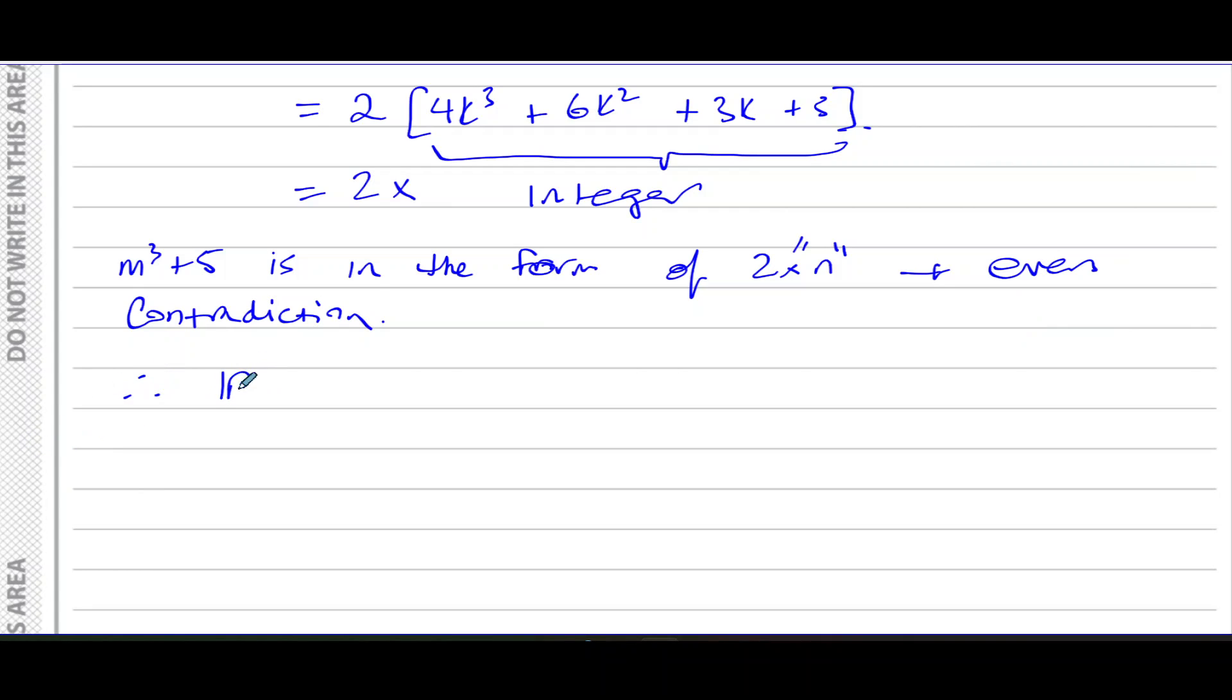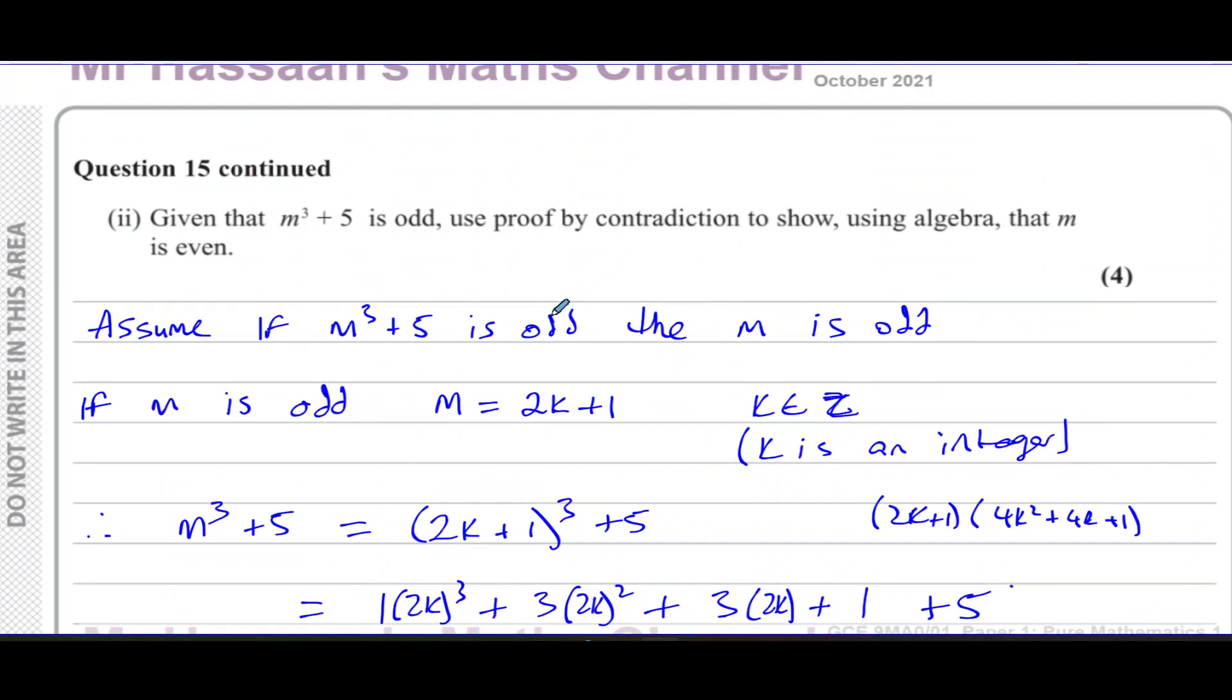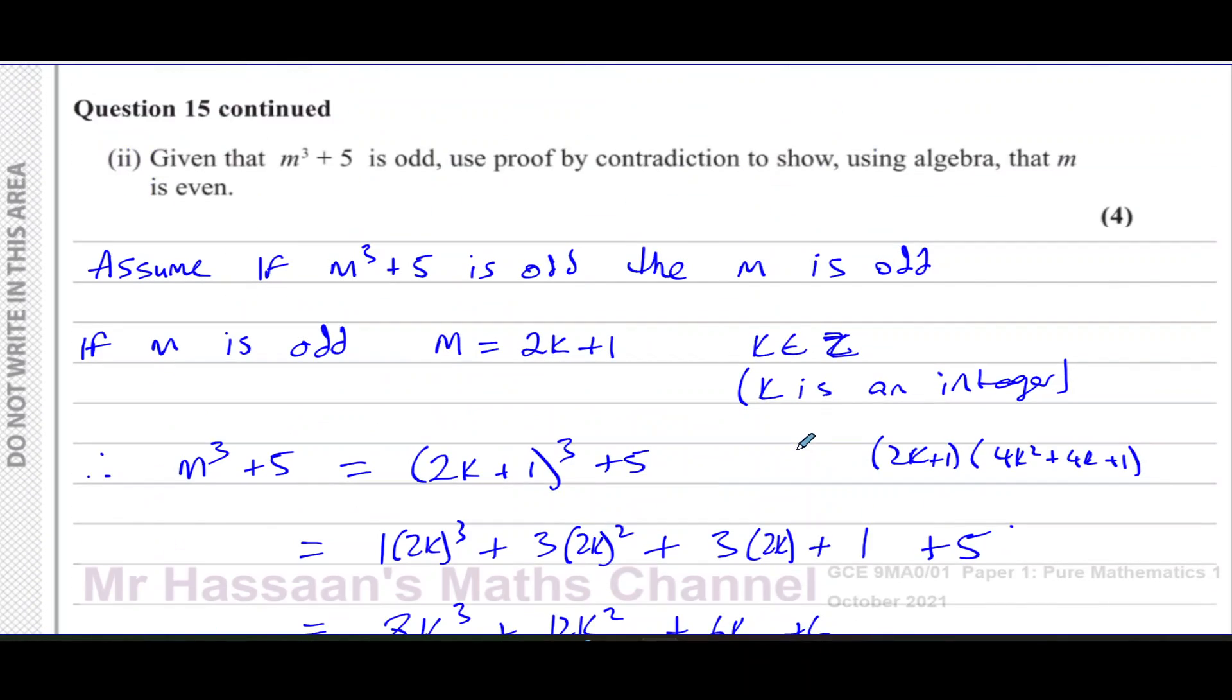therefore, if m is even, then m³ + 5 is odd. That's the proof. If m is even, then m³ + 5 is odd. That's what we have just proved. So there we have the answer to this question.